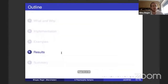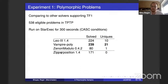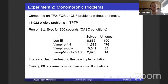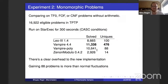We ran Vampire on some problems. Compared to other solvers supporting TF1, there are 538 eligible problems in TPTP — not very many, so please write more problems. Our number was bigger than the others, which is good. In the paper we forgot to run superposition; I've now added those numbers to the slide. We also tested whether adding polymorphism hurt performance on non-polymorphic problems: we lost some problems — there's a clear overhead — but we also gained 88 problems, slightly more than normal fluctuation. In general it didn't destroy things completely.